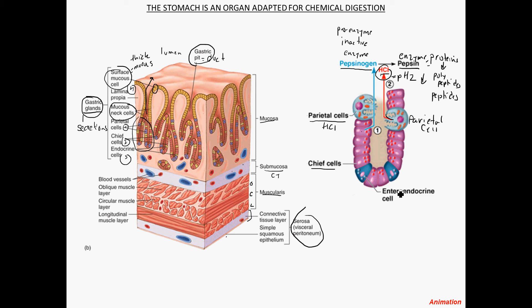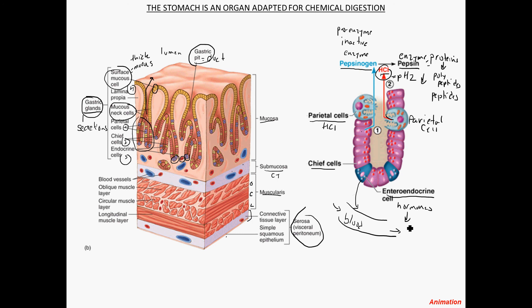Lastly, there are enteroendocrine cells at the base of these ducts. Unlike the parietal and chief cells, which secrete into the duct, these enteroendocrine cells secrete their contents into the bloodstream — they are endocrine. There are blood vessels and capillaries closely associated with these cells. What they secrete are hormones, and the chief hormone secreted is called gastrin. Gastrin travels in the bloodstream and has effects on the stomach, which will be discussed in another screencast.